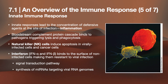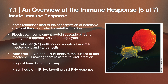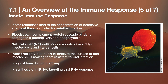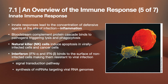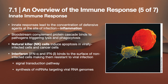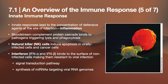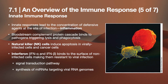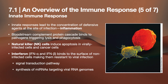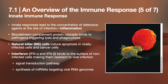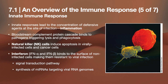Innate responses lead to the concentration of defensive agents at the site of infection — we call it inflammation. You experience fever, rashes, and swelling. If there is an infection, there is inflammation. The bloodstream complement protein cascade binds to pathogens, triggering lysis and phagocytosis. Natural killer cells induce apoptosis in virally infected and cancer cells. IFN-alpha and IFN-beta bind to the surface of non-infected cells, making them resistant to viral infections.